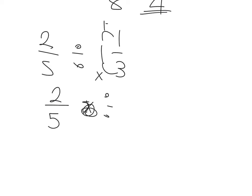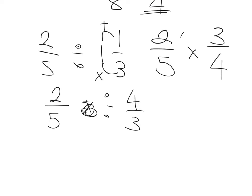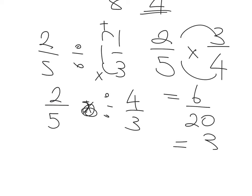3 times 1 is 3 plus 1 is 4, so it's 11 over 5 divided by 4 over 3. Then change the divide to a multiply and flip the second fraction over. Multiplying fractions: 2 times 3 is 6, over 5 times 4 is 20. Divide top and bottom by 2, and that's 3 over 10. Always make sure that you simplify the fraction.